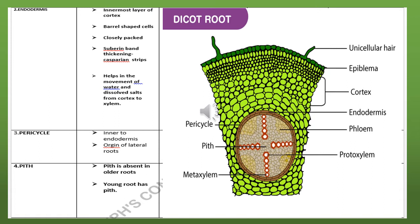Next to the cortex is the endodermis. Endodermis is the innermost layer of the cortex — the cortex is the largest layer and the endodermis forms its innermost boundary. The cells of the endodermis are barrel-shaped and very closely packed, unlike cortical cells which have intercellular spaces. This close packing is due to suberin band thickening.